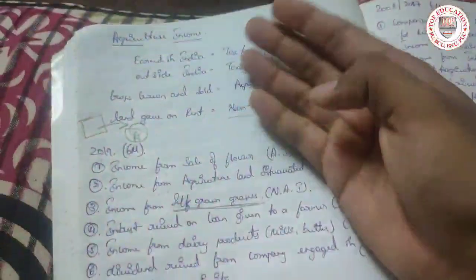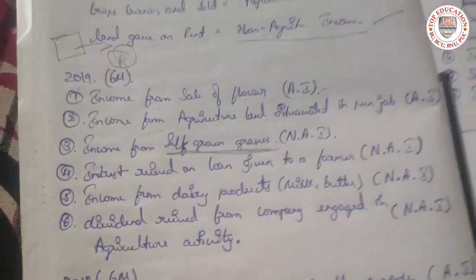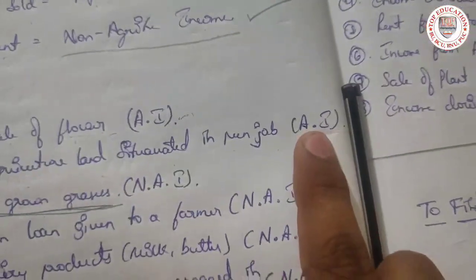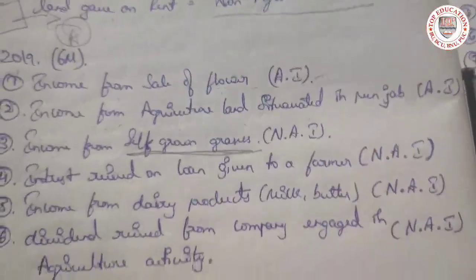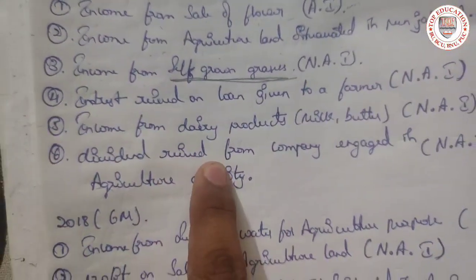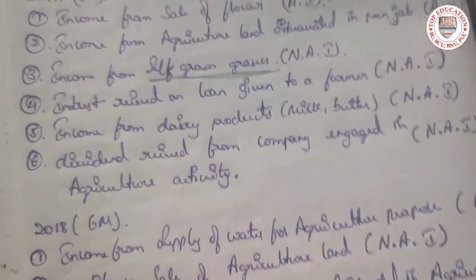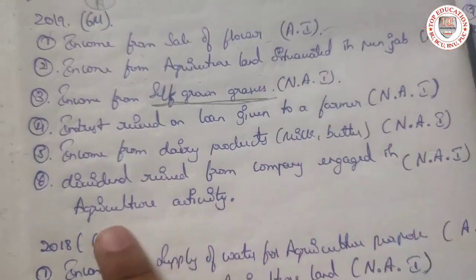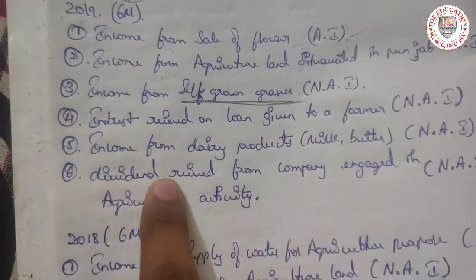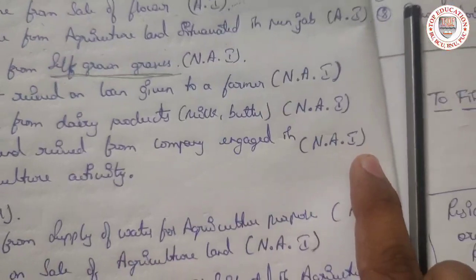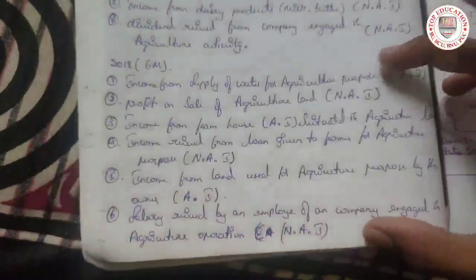If the income is related to agriculture then only we call it agriculture income; if it is not related to agriculture then we call it non-agriculture income. Dividend received — a farmer doesn't deal with dividends. Even if a company is engaged in agriculture activity, dividend received from that company is non-agriculture income.